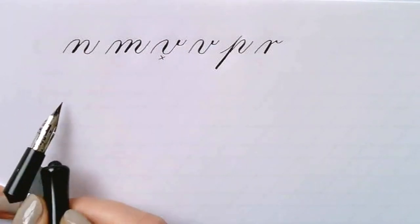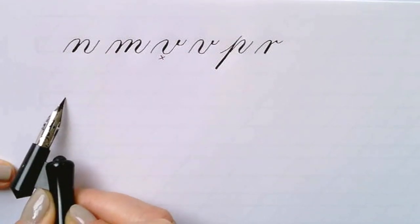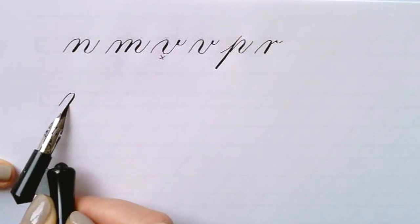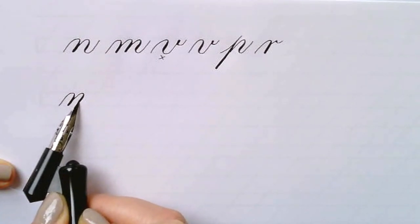The second group that we're practicing is going to have a lot of overturn arches and the N is going to be the first one. You'll make one arch and then followed by a compound curve.